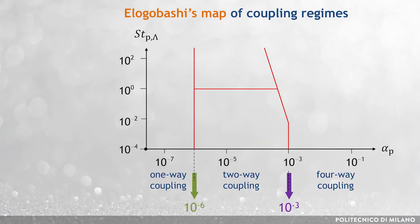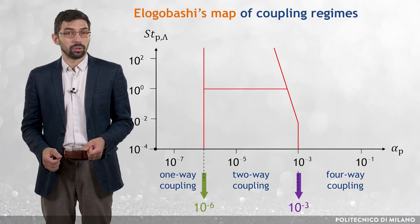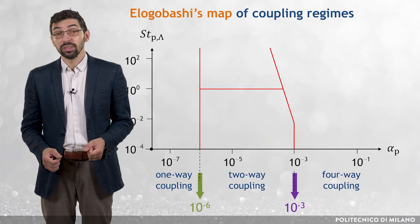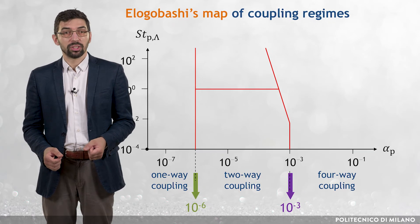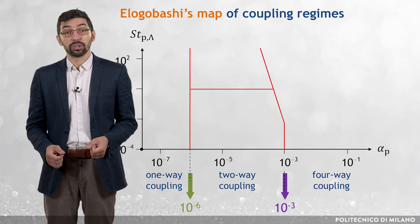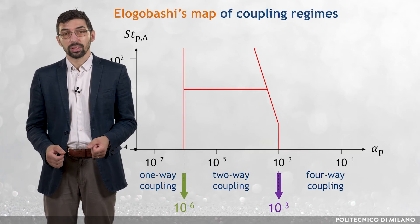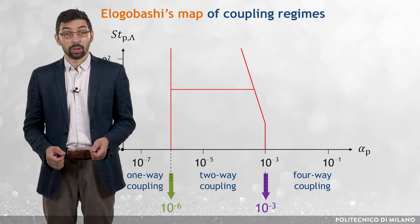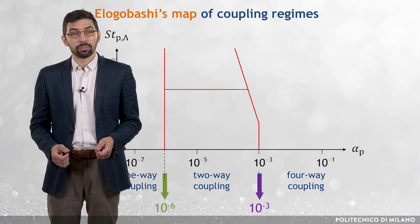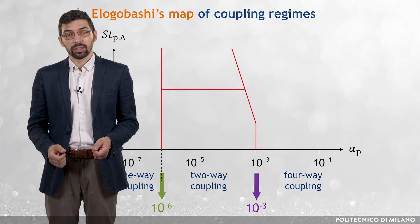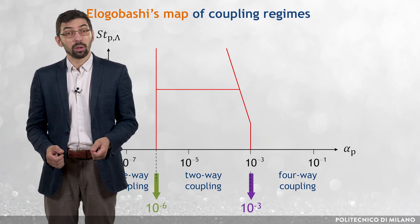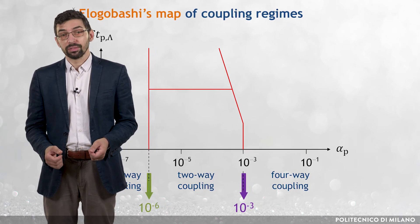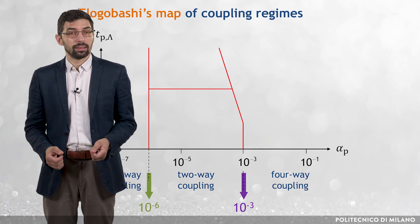Such low volume fractions, typical of gas-solid flows, are seldom encountered in liquid-solid flows. In most engineering applications involving dispersed liquid-solid flows, El-Gobashi's map appears very conservative. For instance, in slurry-erosion prediction simulations, the assumption of one-way coupling regime seems reasonable even for volume fractions of about 1%.